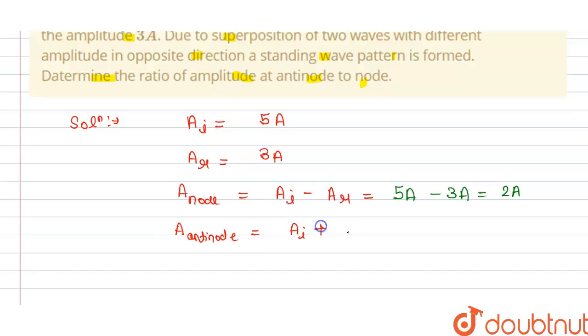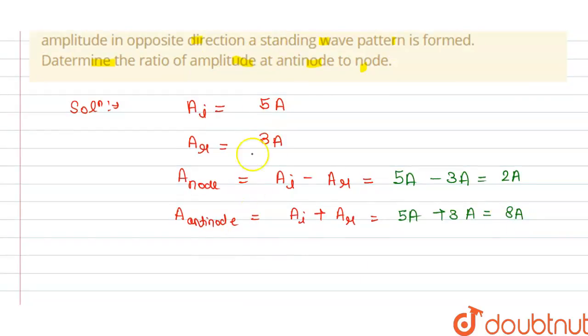And we have the amplitude of antinode, so for this we have to add Ai plus Ar, that is the amplitude of incident wave plus reflected wave. So we have this is 5A plus 3A, that is equals to 8A.